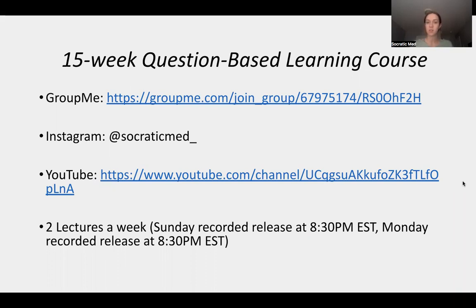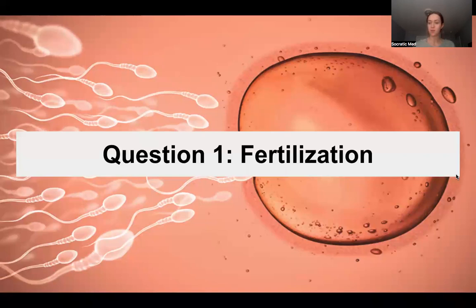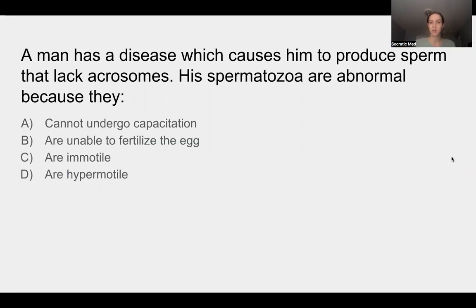In this lecture style, we will do about nine to ten questions. I'll ask the question first, you'll take a few minutes to answer it, and then I will go through all of the topics you would have needed to know to answer that question. Our first question — we're going to start at the very beginning with fertilization. A man has a disease which causes him to produce sperm that lack acrosomes. His spermatozoa are abnormal because they blank. Take a minute, pause the video, and try to answer this question.